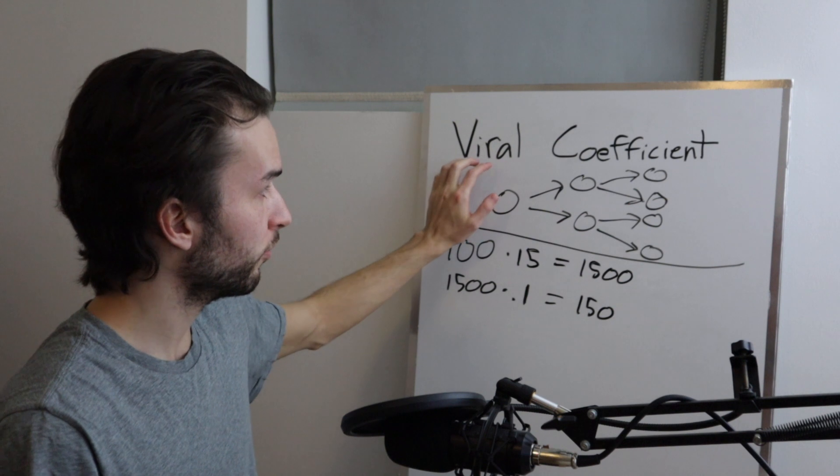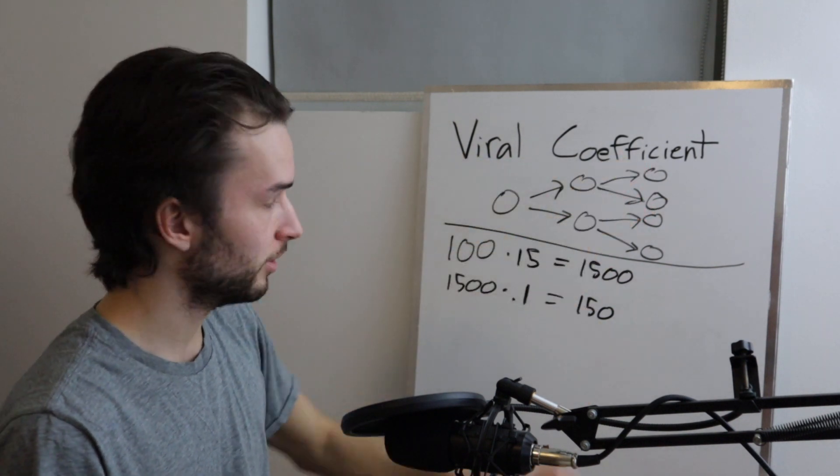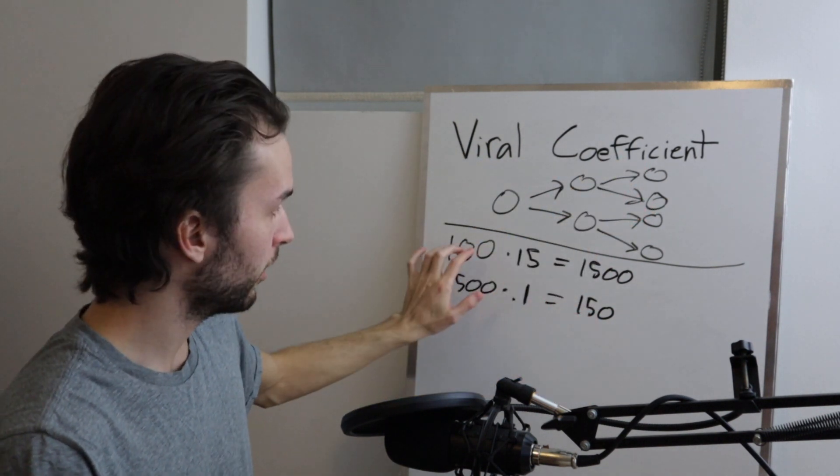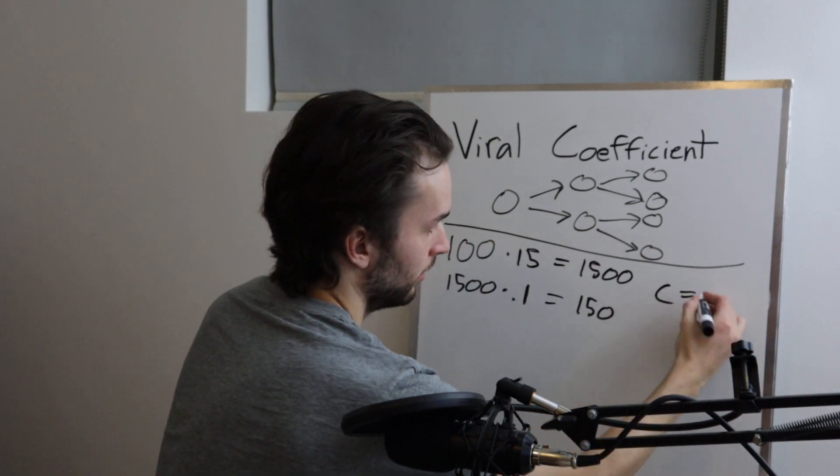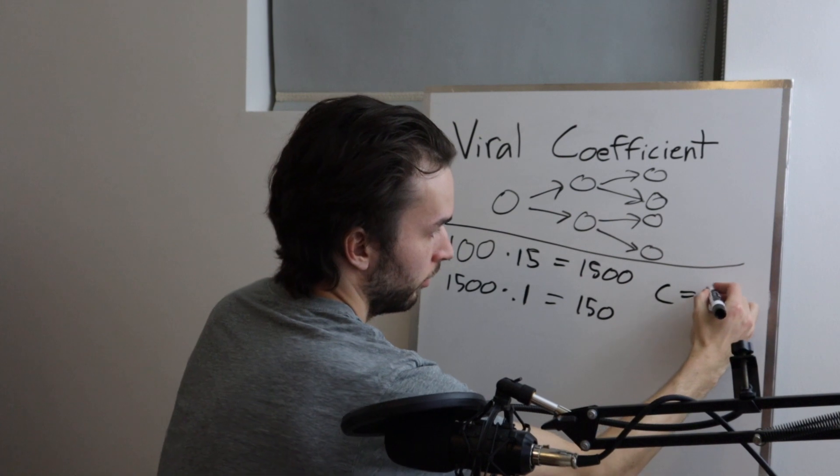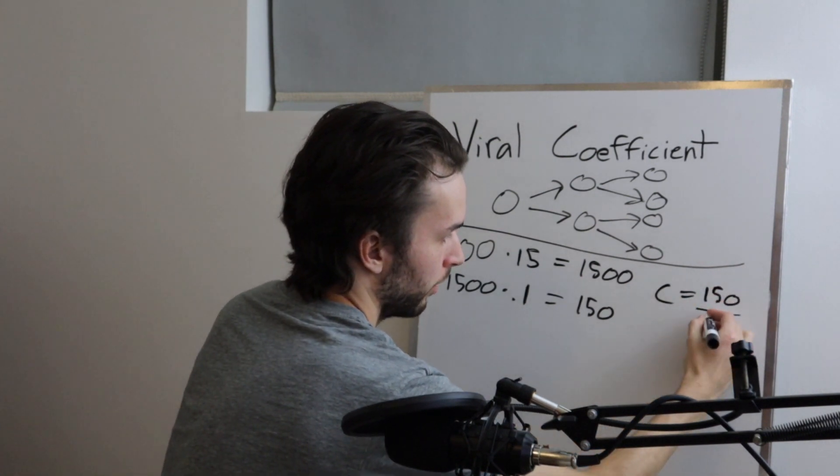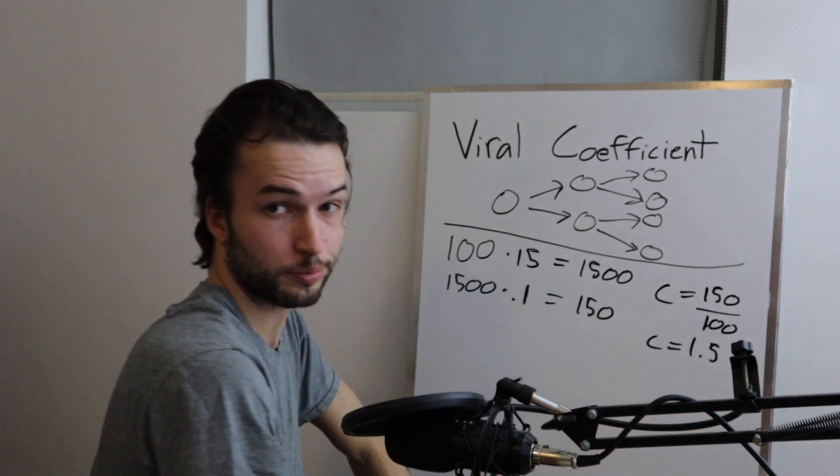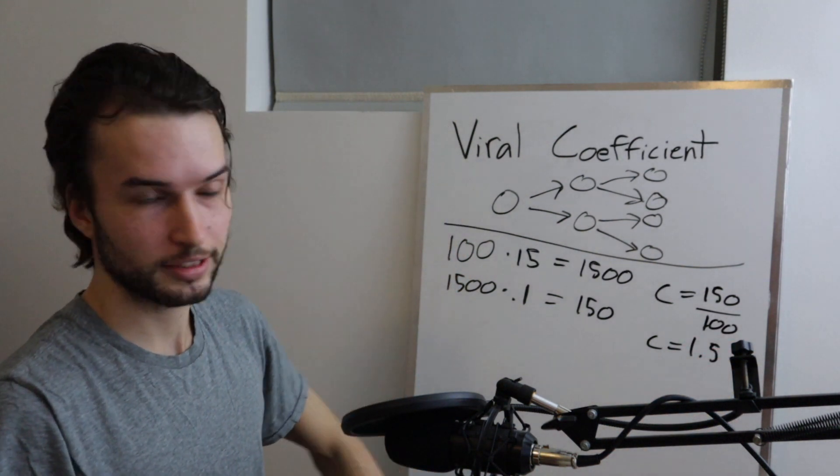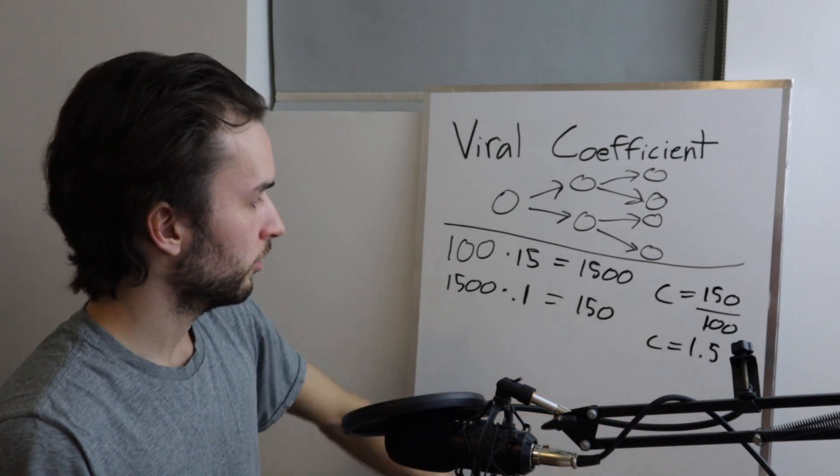So our initial batch of 100 customers, they gave us 150 new customers. And the way we find what the viral coefficient is, is we take the new number divided by the original number. So the viral coefficient, I'll just call it C, that's equal to 150 divided by 100, and so C is equal to 1.5.